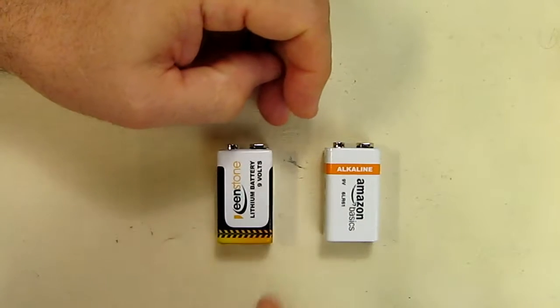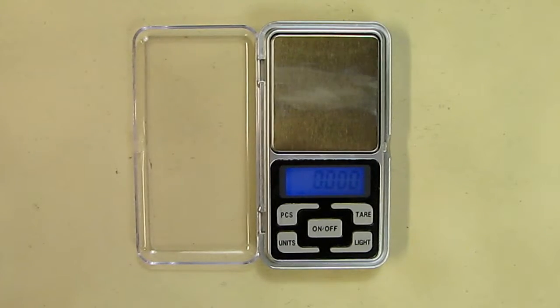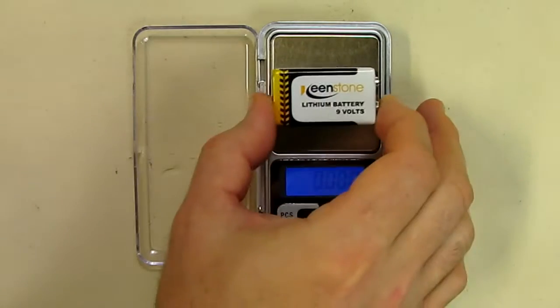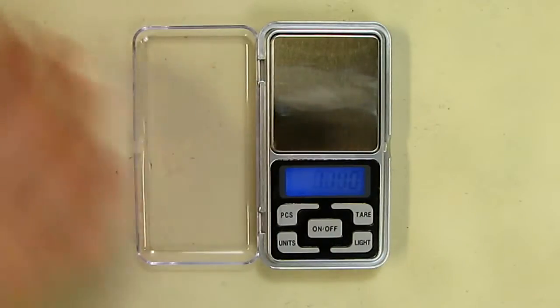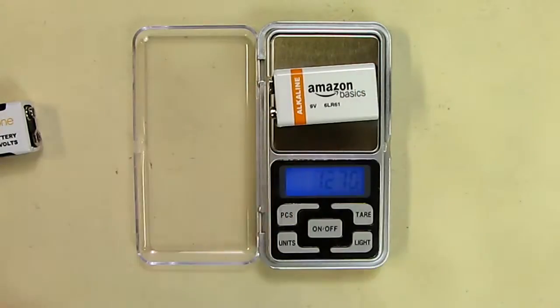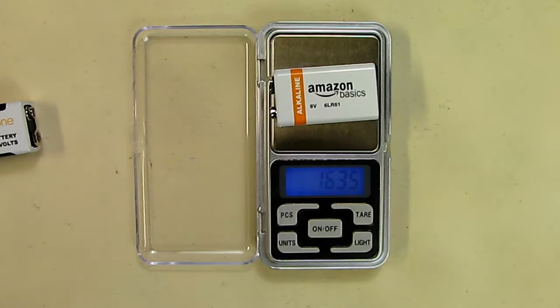Just in case you're curious about the weight, let's look at the weight differences. This is the Keenstone battery at 1.4 ounces and the Amazon basics battery at 1.6 ounces, so the Amazon basic battery is a little bit heavier.